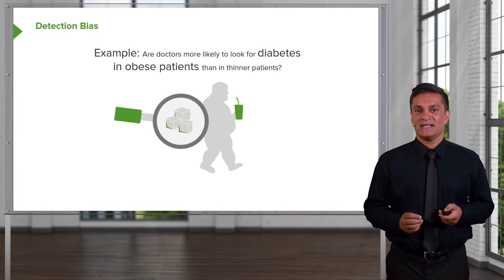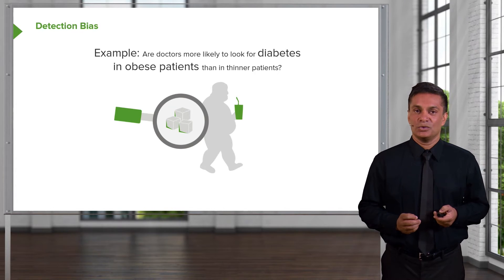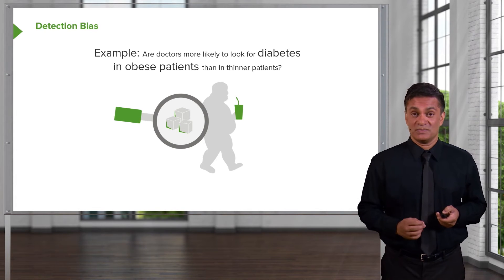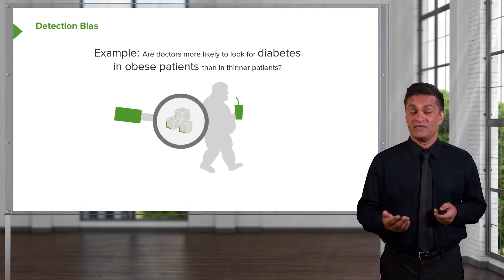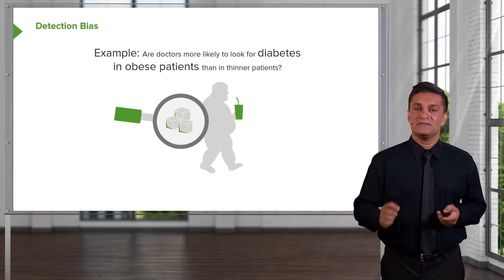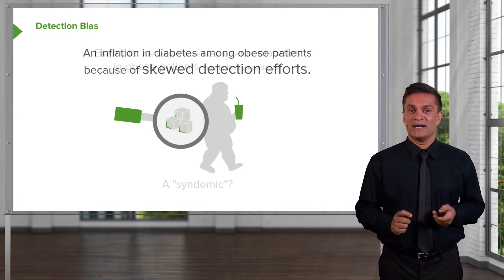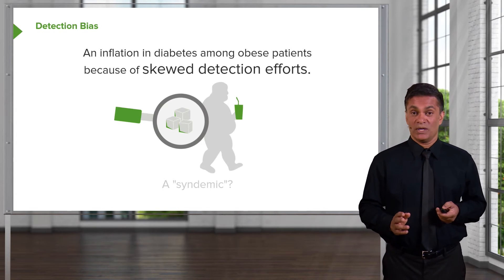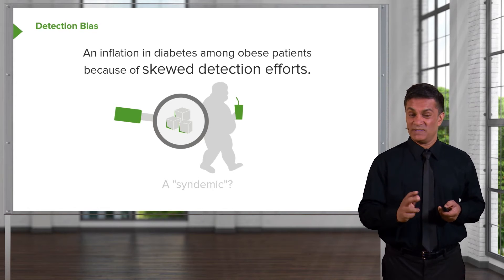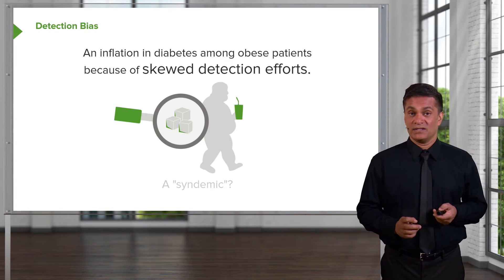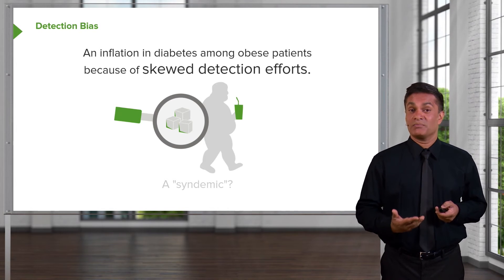Here's an example. Doctors are more likely to examine obese patients for diabetes than they do thin patients. We know this to be true because we know that obesity is a risk factor for diabetes. Therefore, they're more likely to find diabetes amongst obese patients than in thinner patients. This gives rise to something called a syndemic — a syndemic is when we have an epidemic based on synergy between two different diseases, in this case diabetes and obesity. It might be true, it might not. But it's entirely conceivable that it gives you a skewed impression of the prevalence of a certain condition in a certain kind of person.